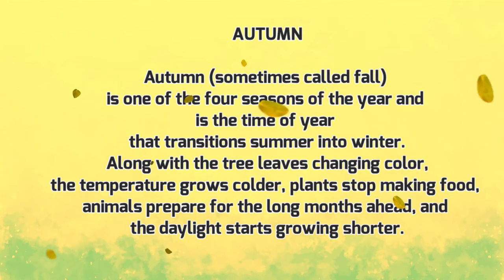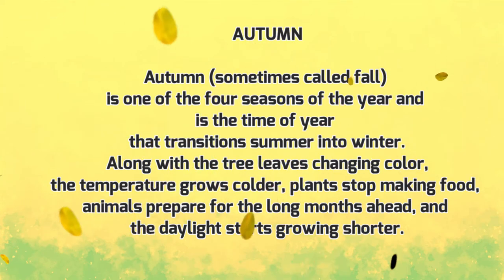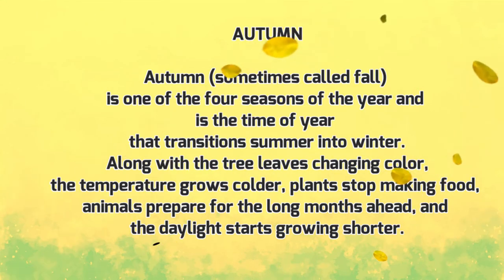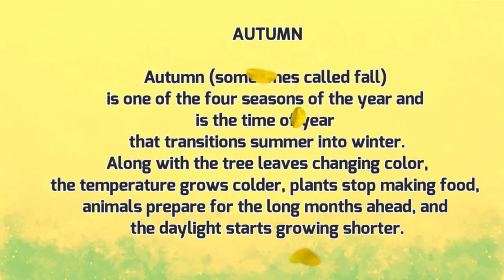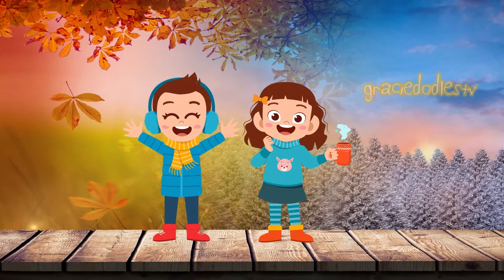Autumn, sometimes called fall, is one of the four seasons of the year. It is the time of year that transitions summer into winter. Along with the tree leaves changing color, the temperature grows colder, plants stop making food, animals prepare for the long months ahead, and the daylight starts growing shorter.